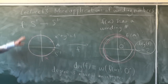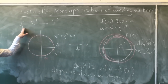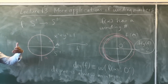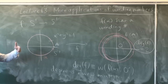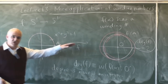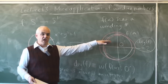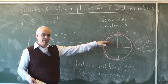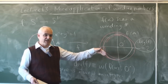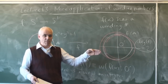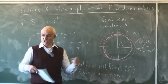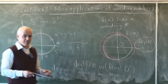An important remark is that if we vary the function continuously — if we change the mapping continuously — this degree is not going to change. Because it's an integer, it can't jump from 2 to 3 without dramatically changing the function.